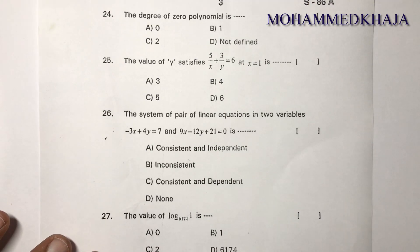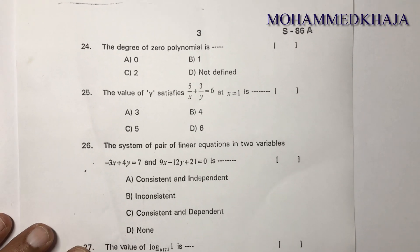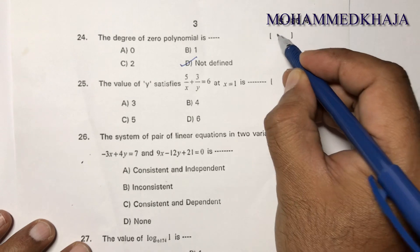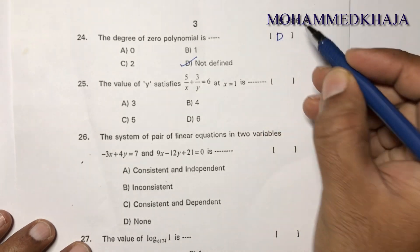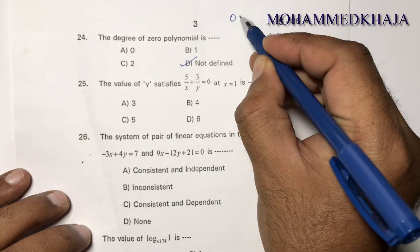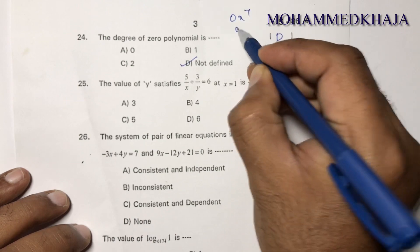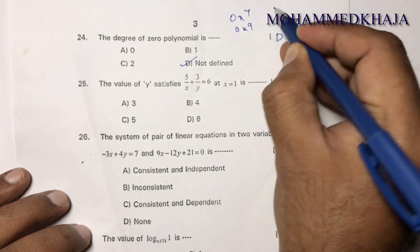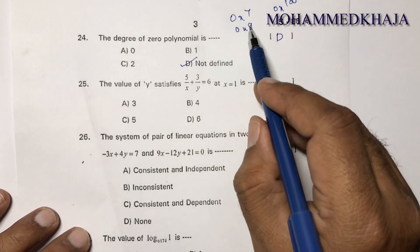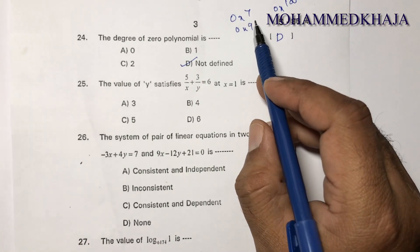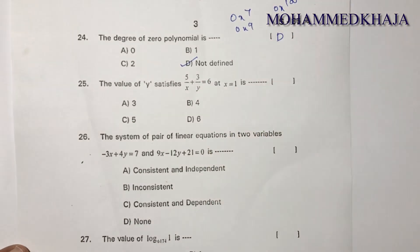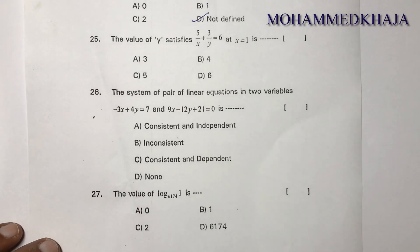Next question: The degree of the zero polynomial is not defined. This is because the zero polynomial can be written as 0·x⁷, 0·x⁹, or 0·x¹⁰⁰, so we cannot determine a specific degree. The correct option is D.